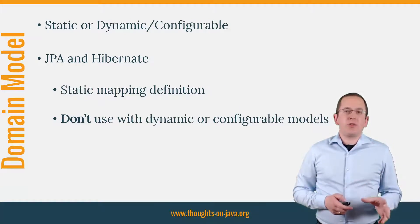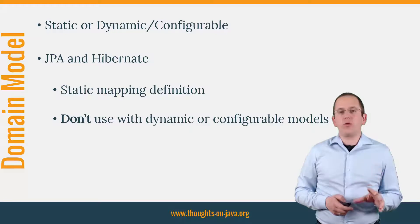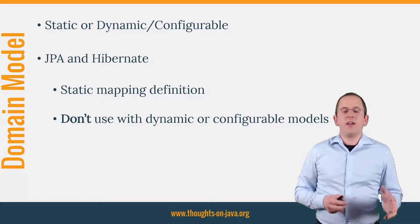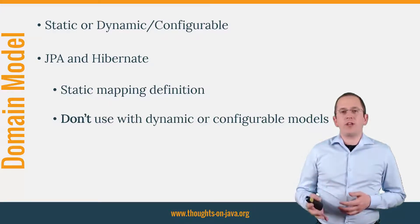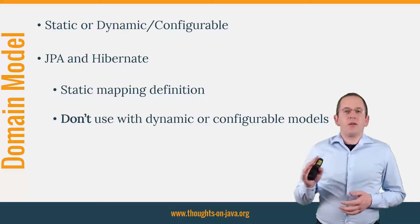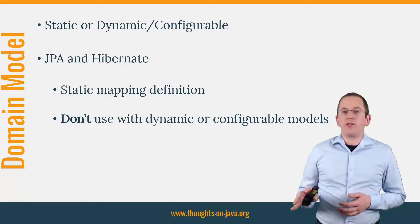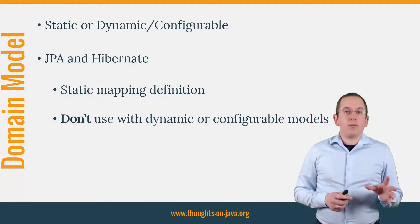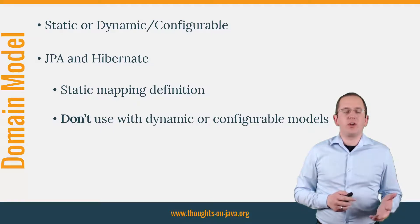Configurability became a popular requirement in recent years, and there are some applications which have a configurable domain model and store data in a relational database. I think that a NoSQL database is, in general, the better solution for these applications, but you can also use a relational database. However, you should not use JPA or Hibernate ORM in these kinds of applications. The acronym ORM — Object Relational Mapping — already hints that it might not be a good idea to use it with a configurable domain model.